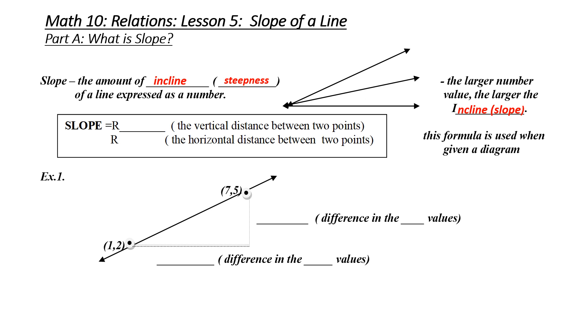How do we calculate slope? We calculate slope as measuring the rise, which is the vertical distance between two points, and divided by the run, which is the horizontal distance between two points. We would use this formula when given a diagram.